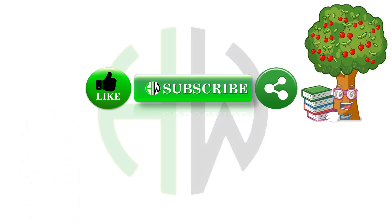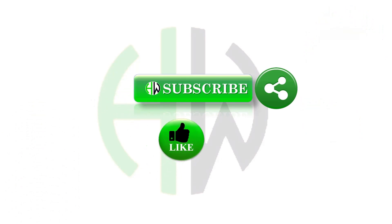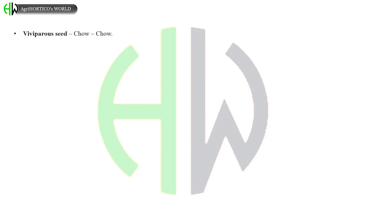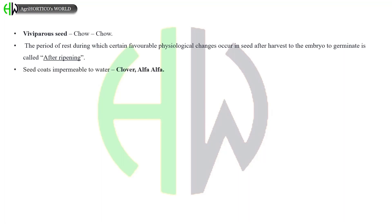Viviparous seed is found in chow chow. The resting period during which certain favorable physiological changes occur in seed after harvest to the embryo to germinate is called after-ripening. Seed coats which is impermeable to water is seen in clover and alfalfa. Seed coats which is impermeable to oxygen is seen in xanthium. Moist chilling temperature for stratification is 0 to 10°C. Nucellar embryony is found in citrus and polyembryony seen in jamun, mango.